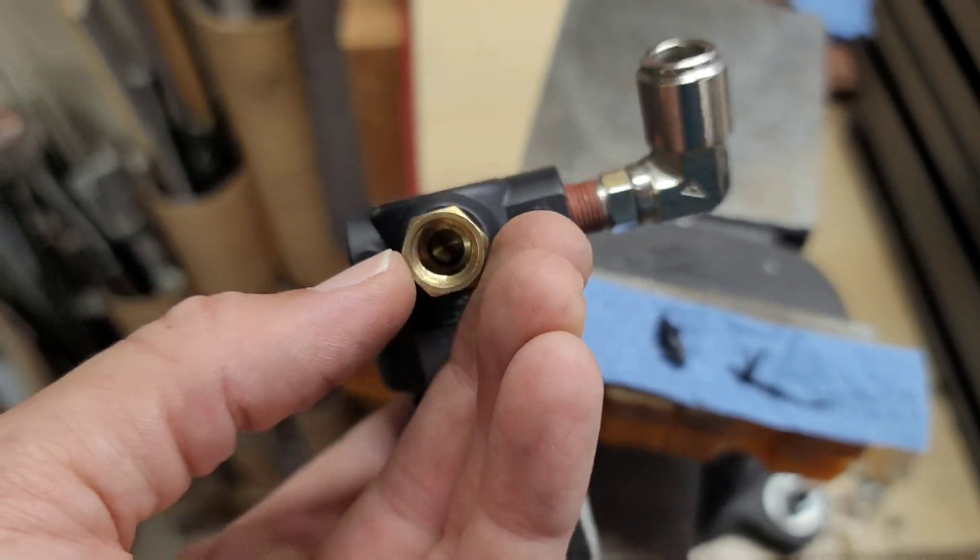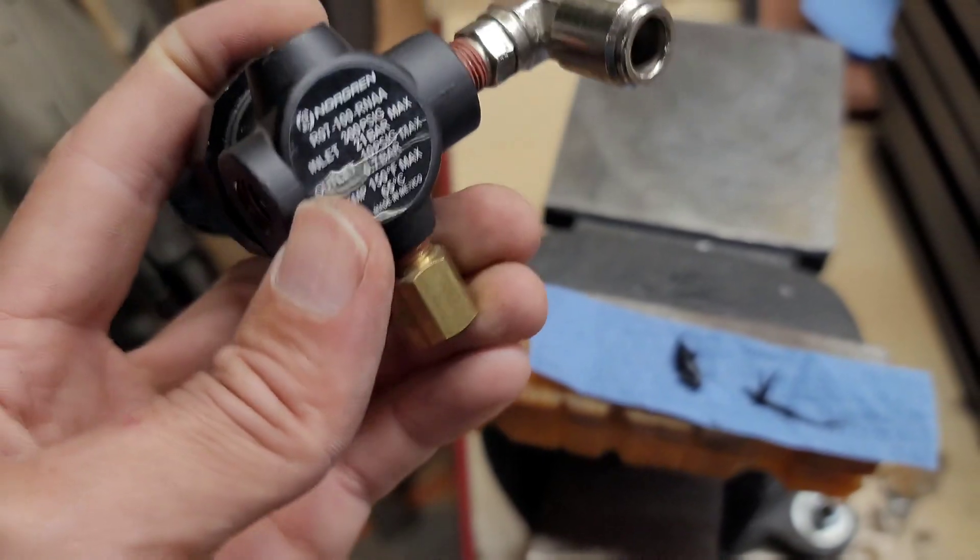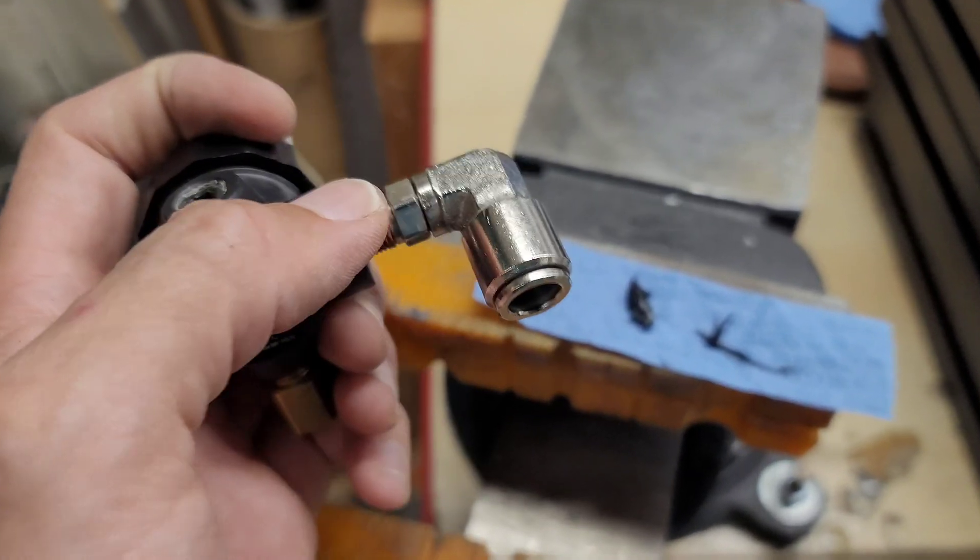It has this brass piece that has a little tiny hole in there. There's, I guess it's just a pressure relief. Air was coming out of this but no air was coming out of this elbow.